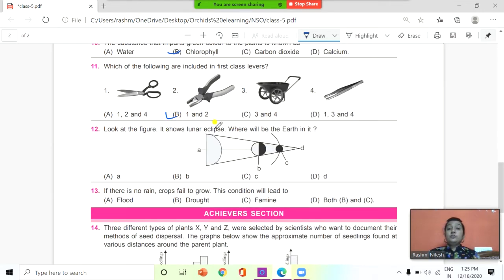Next, look at the figure. It shows lunar eclipse. Where will be the earth in it? You need to see the figure. So here it is showing lunar eclipse. So what do you think? Where will be the earth? Look at the options: A, B, C, D. This is A represents sun, B, C, and D. Where will be the earth? It is B. This is your earth, because it is showing lunar eclipse. And at the time of lunar eclipse, earth is in between sun and moon.